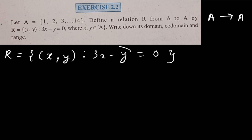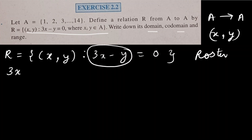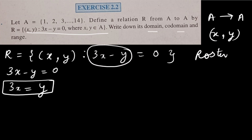The relation between the first and second element of the ordered pair is 3x − y = 0, which means y = 3x. We have to write this in roster form, then write its domain, co-domain, and range. From 3x − y = 0 we get y = 3x.